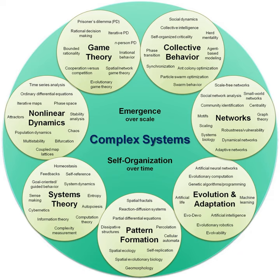Complex adaptive systems are special cases of complex systems that are adaptive in that they have the capacity to change and learn from experience. Examples of complex adaptive systems include the stock market, social insect and ant colonies, the biosphere and the ecosystem, the brain and the immune system, the cell and the developing embryo, the cities, manufacturing businesses and any human social group-based endeavor in a cultural and social system such as political parties or communities.